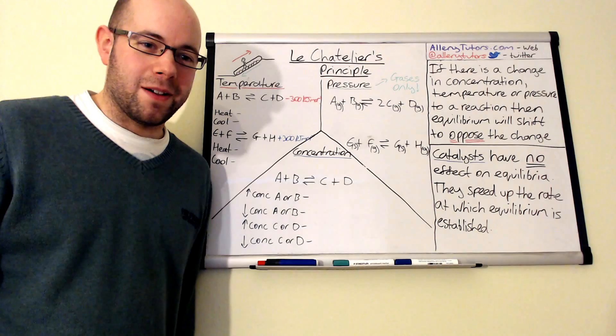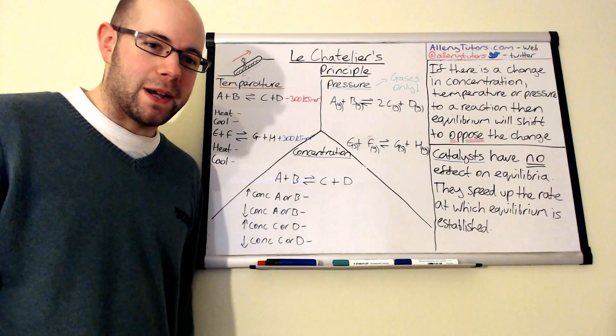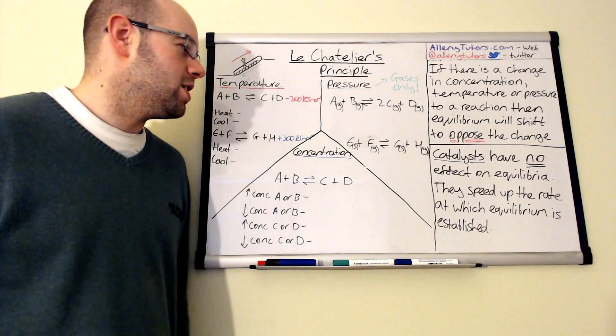Hi there, my name is Chris Harris and I'm from alomeotutors.com. In this video we're going to look at Le Chatelier's principle. Le Chatelier was named after the French chemist Henri-Louis Le Chatelier, who came up with a principle to explain what happens when we put a change on an equilibrium system. That change of conditions could be something like temperature, pressure, or concentration.